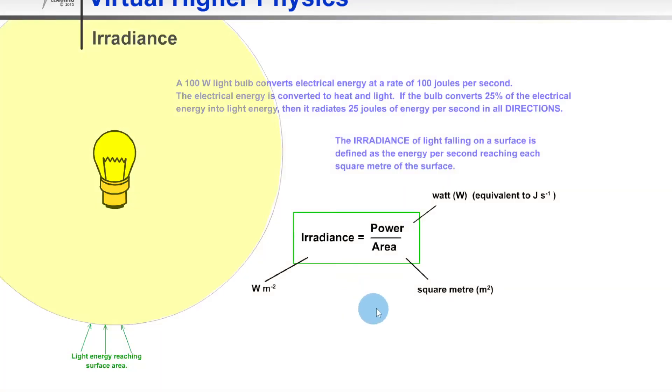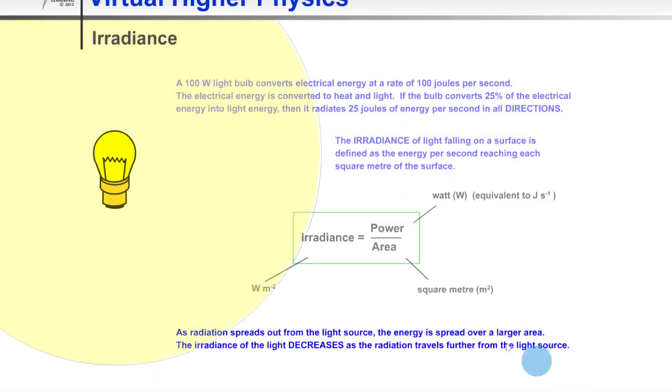I'll just show you that again, but we expect that when we get further away from a point source of light, the irradiance of the light is going to drop off, it's going to decrease. And the opposite is true: as we get closer to a point source of light, the irradiance should increase.